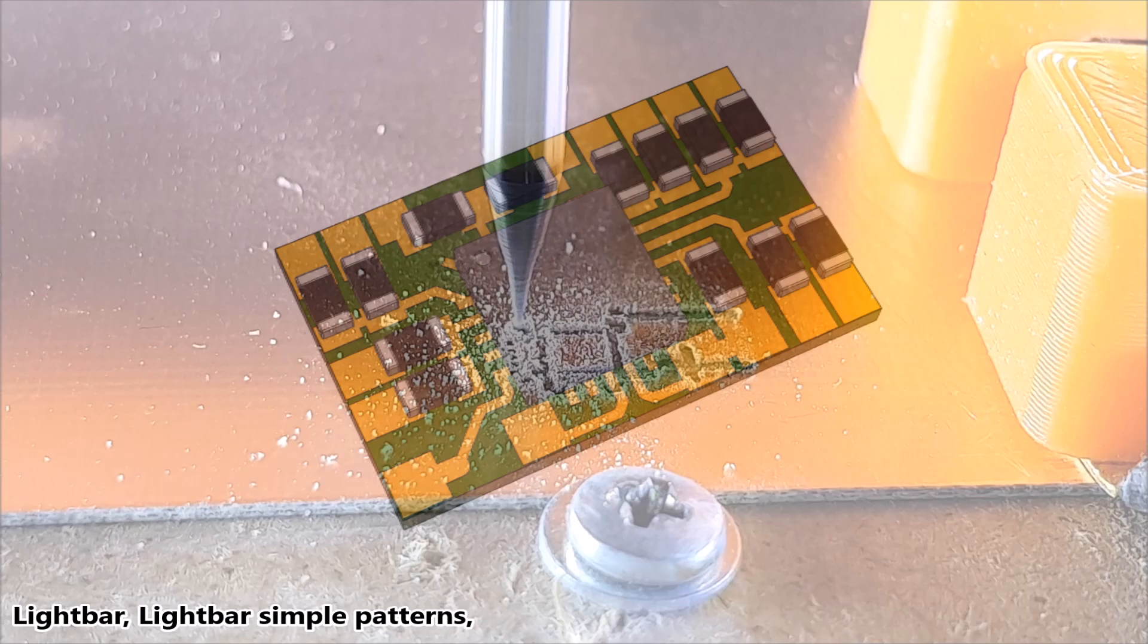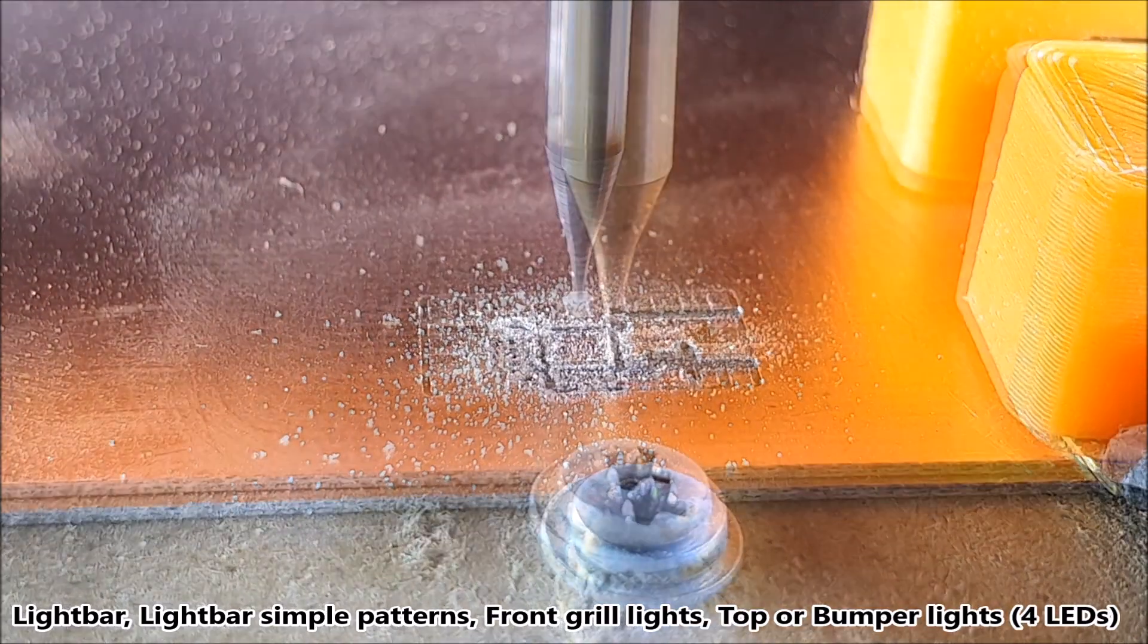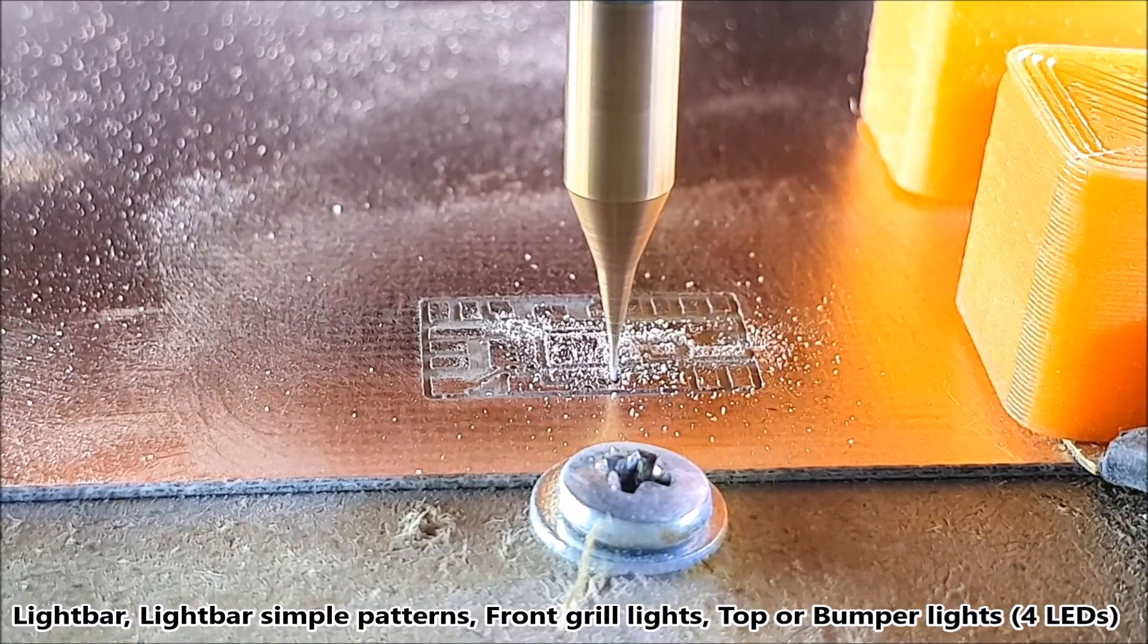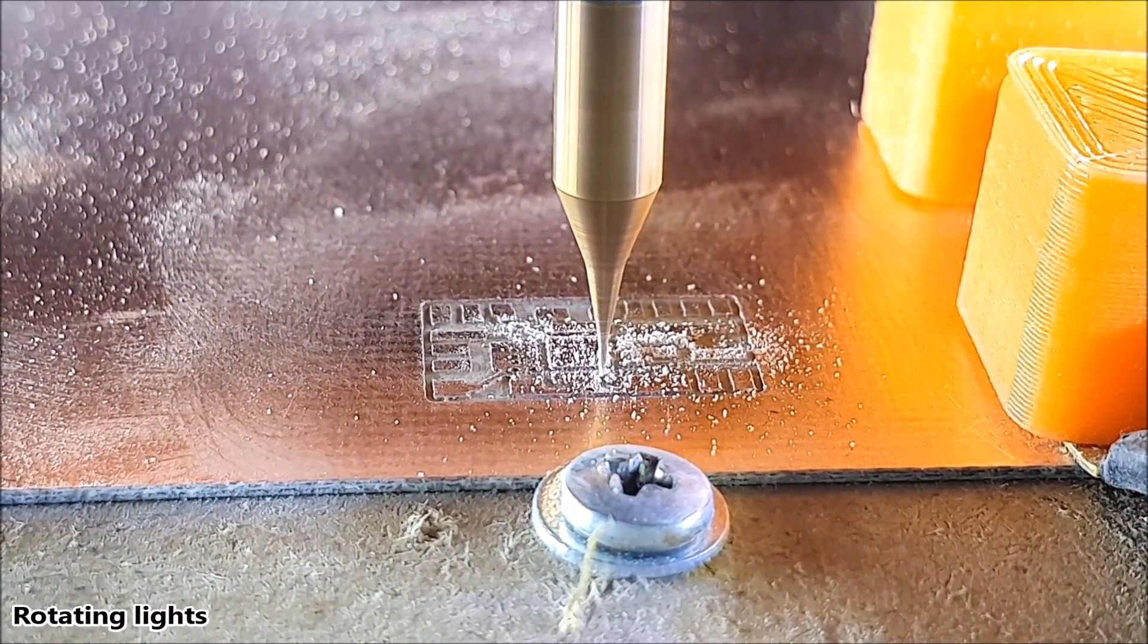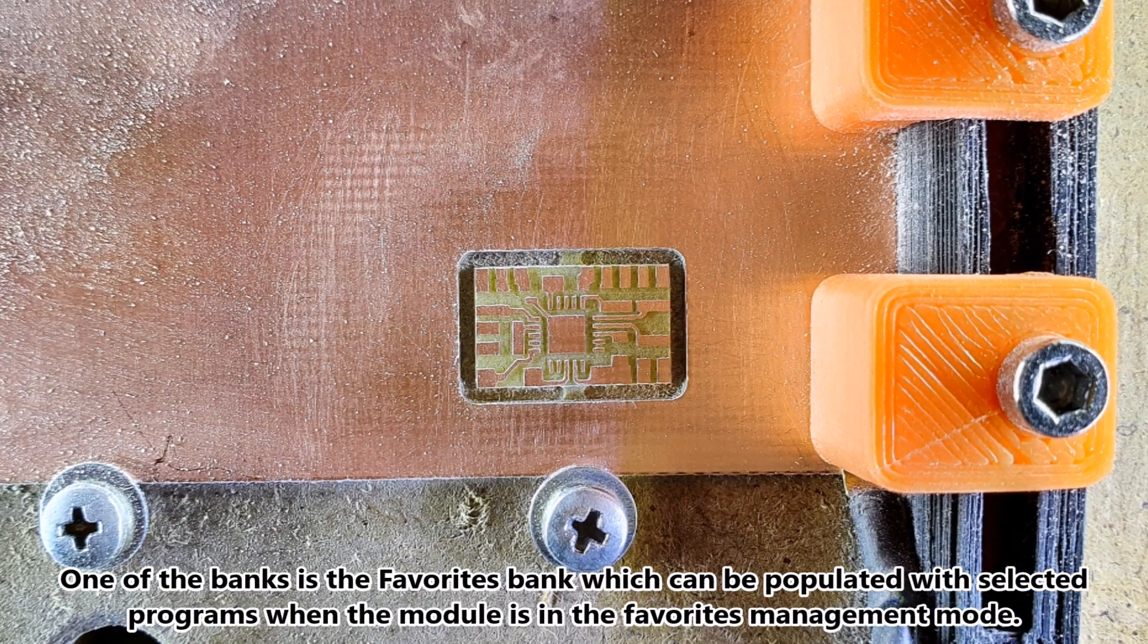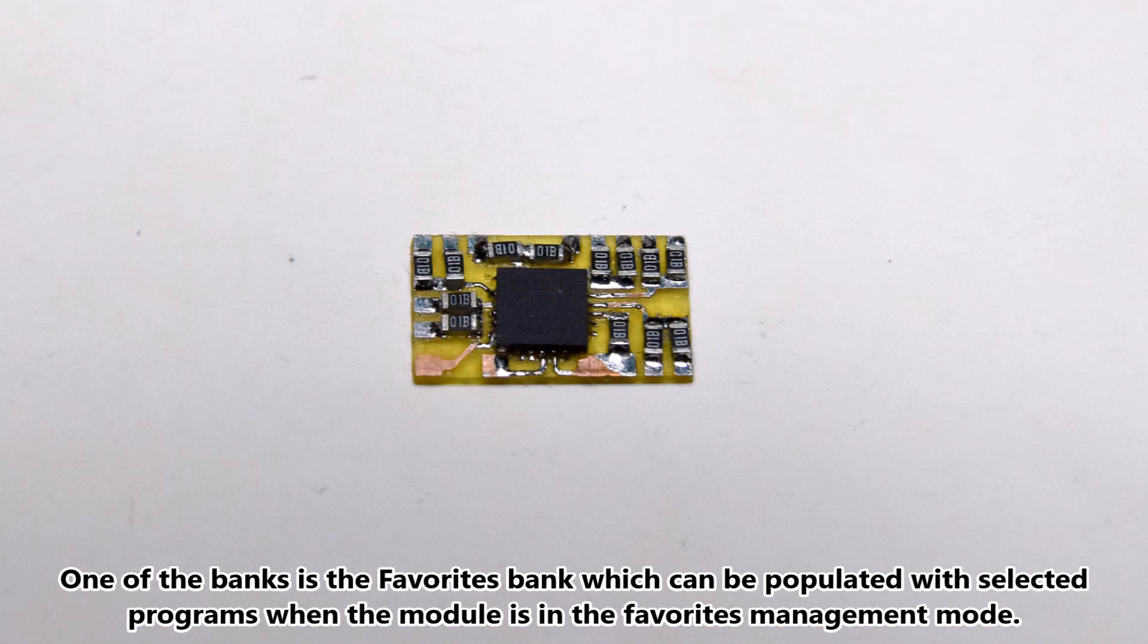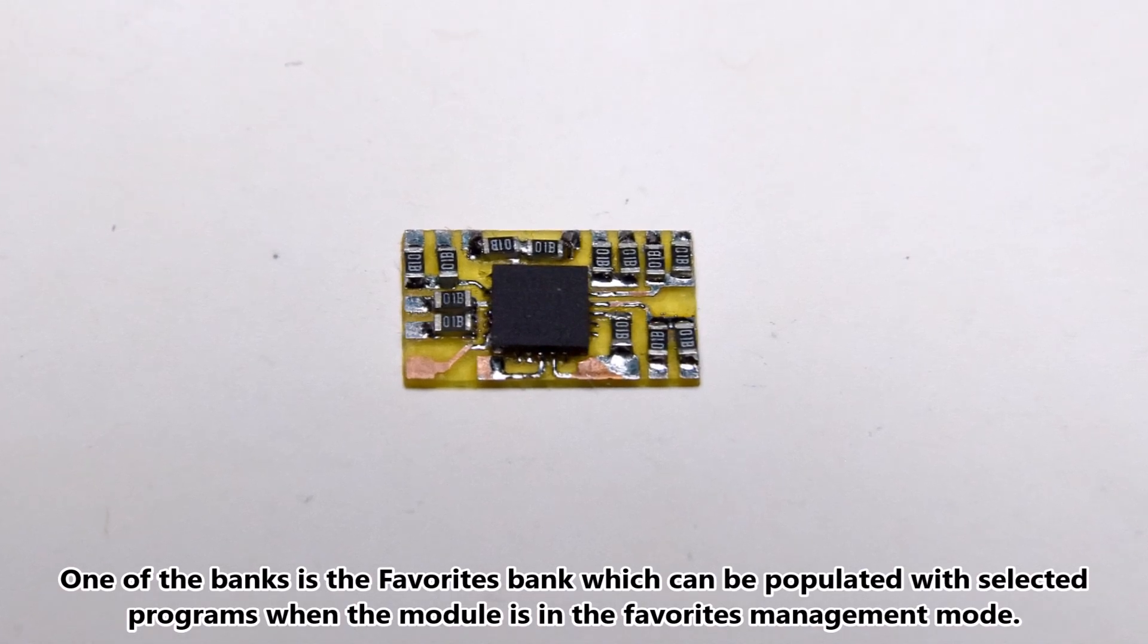It includes light bar simple patterns, front grille lights, top or bumper lights with four LEDs, rotating lights, and multifunctional lights. There is a favorites bank which can be populated with selected programs when the module is in favorites management mode.